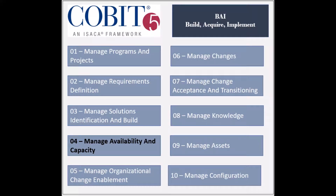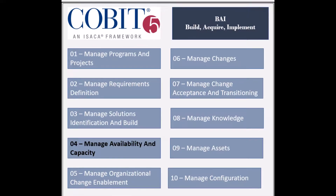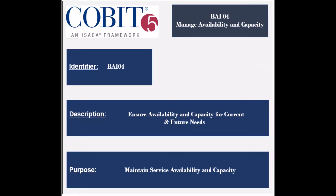The fourth process of the Build-Acquire-and-Implement domain is called Manage Availability and Capacity, with the identifier BAI-4. The process ensures that the enterprise's current availability and capacity requirements are met, and that future needs are forecasted and provisioned. This forecast should be based on the business requirements, impact analysis, and risk assessments. The purpose of the process is to maintain service availability and efficient resource management by properly forecasting future performance and capacity requirements.